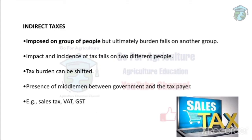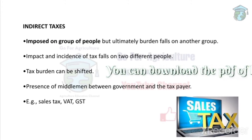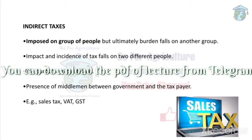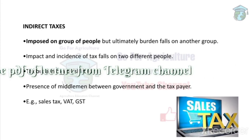Next are indirect taxes. While direct taxes are paid by a single person, indirect taxes are paid by a group of people. For example, sales tax and GST are applied to every person — whether a common man or a VIP — and everyone must pay them.